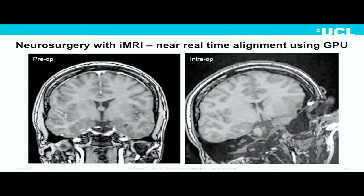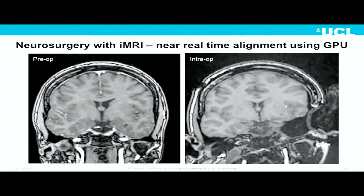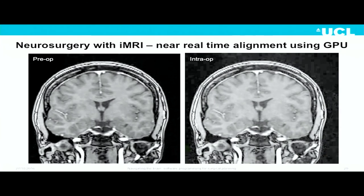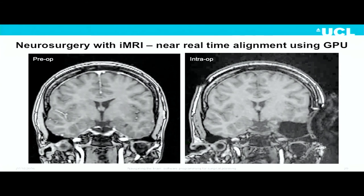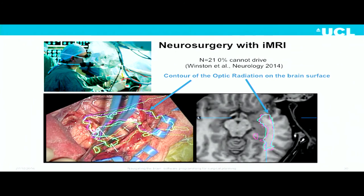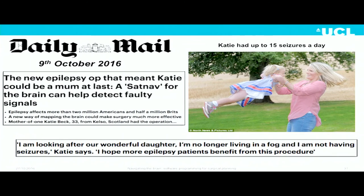Since then, we implemented this system in the operating room, using image registration to align intraoperative data with preoperative information and propagate the fibre tract information. We can then present the location of the optic radiation on the surgeon's microscope, allowing them to avoid resecting it. We published this a few years back and demonstrated no loss of sight in our population of 21 patients, and we've been expanding this work. This is Kate, the patient from the earlier video, featured in a newspaper article — she is now completely seizure-free, has never had a seizure since surgery, got married, and has a lovely child.